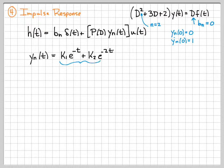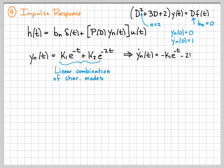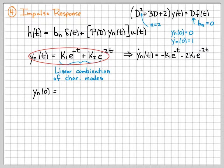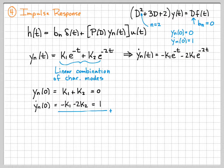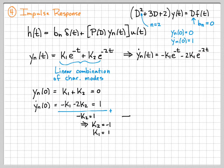Let's go ahead and figure out what k1 and k2 are. Taking the derivative of yn of t gives this equation. Evaluating yn of t at time zero gives k1 plus k2, which must equal zero — that's one equation. Evaluating the derivative at time zero gives minus k1 minus 2k2, which must equal 1. Adding these two equations, the k1's cancel, giving minus k2 equals 1, so k2 equals negative 1. Plugging back in, k1 must equal 1. So I now know what yn of t is equal to.